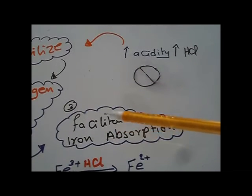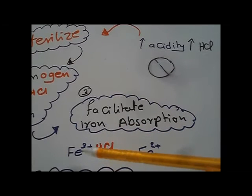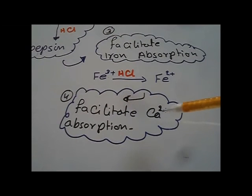The third function is to facilitate the iron absorption by converting it from the ferric into the ferrous state, and also facilitate the calcium absorption by keeping it in the ionized form. Now I will talk about the mechanism of the HCl secretion from the parietal cells.